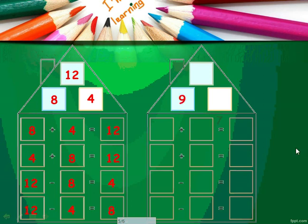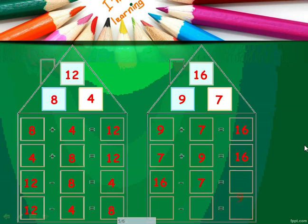Another example: we will choose numbers nine and seven. Nine plus seven equals sixteen. So nine, seven, and sixteen are a fact family because they form four facts: nine plus seven equals sixteen, seven plus nine equals sixteen, sixteen minus seven equals nine, and sixteen minus nine equals seven.